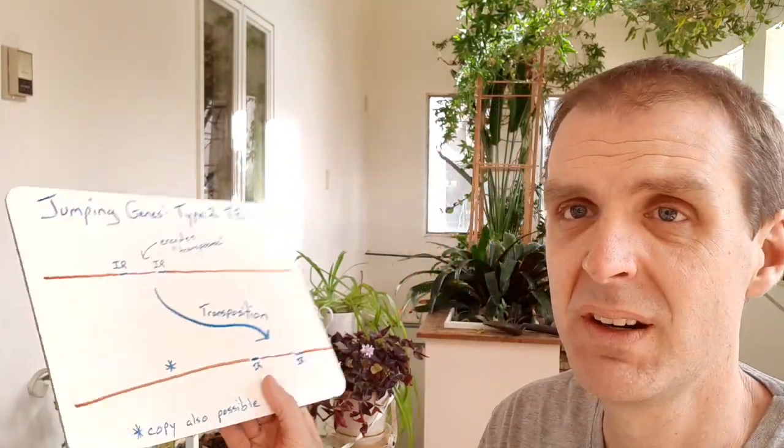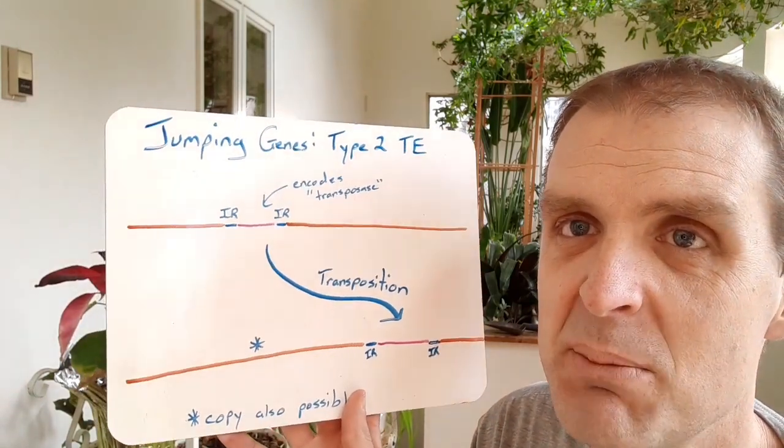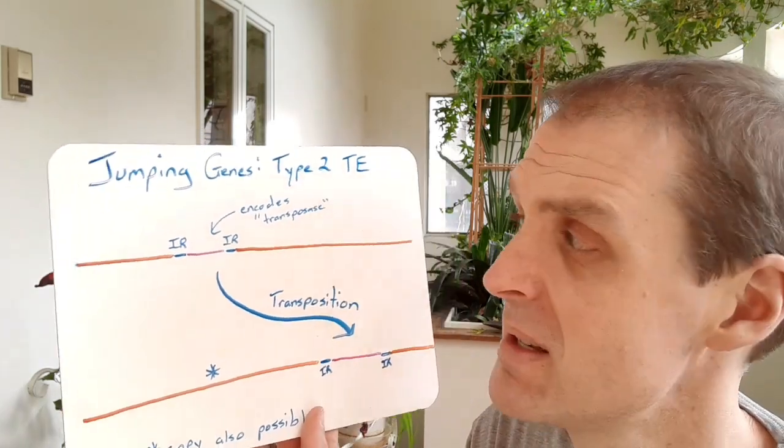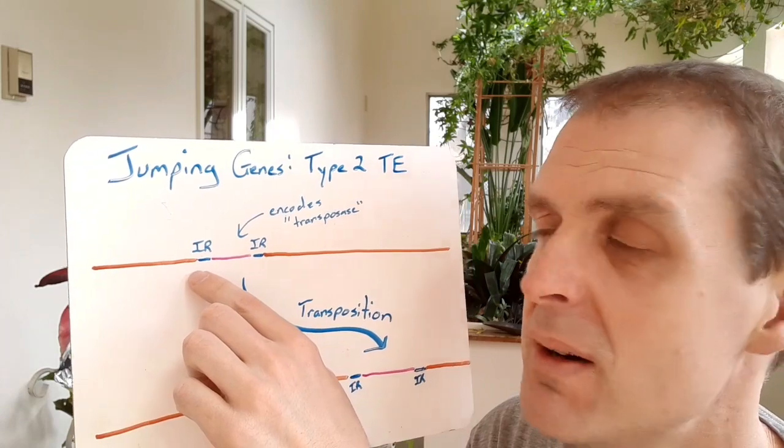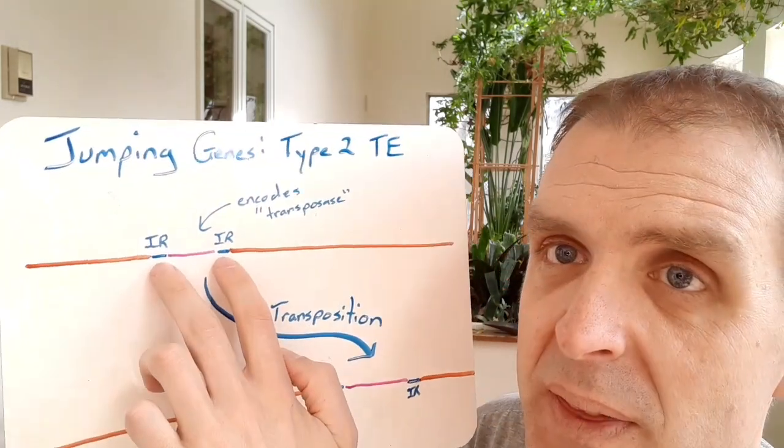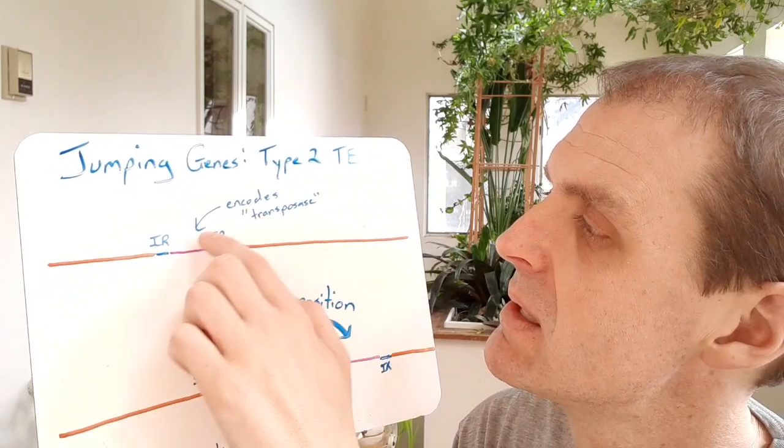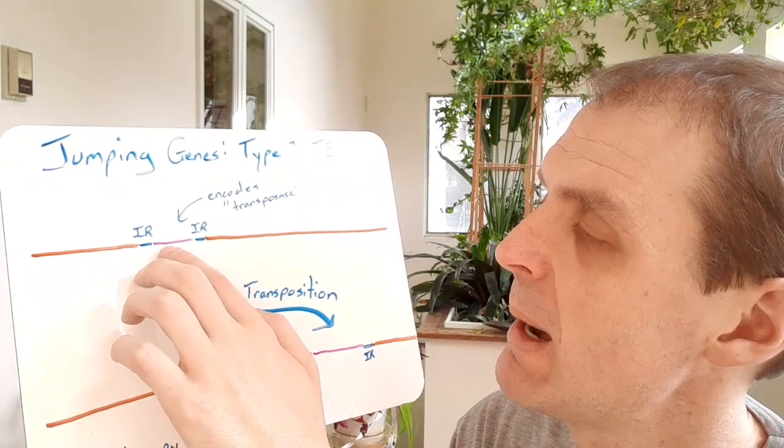If there was a type 1 transposable element then there's probably a type 2 transposable element, and these are called transposases. Here we've got a human genome in brown, flanking in blue right there is some inverted repeat sequences, and then somewhere in that pink part it encodes a transposase.